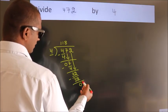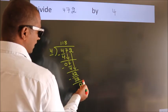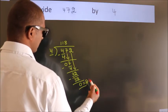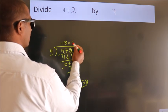After this, no more numbers to bring it down. So we stop here. This is our remainder. This is our quotient.